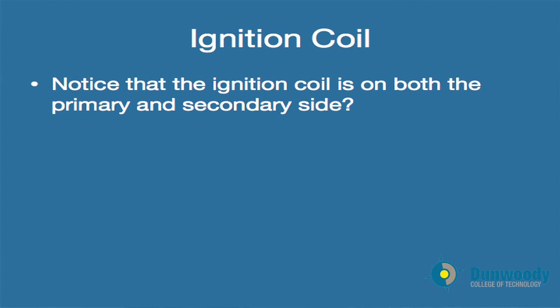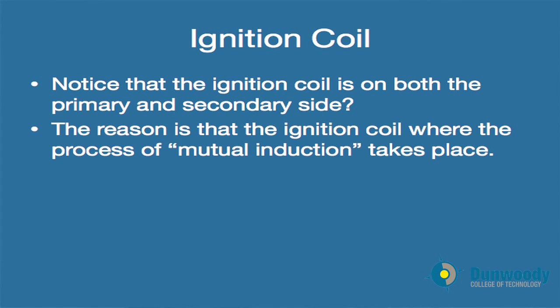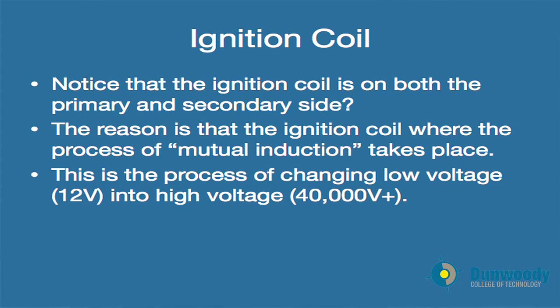What happens inside of the ignition coil is a process called mutual induction. You may remember this topic from back in 172 when we discussed alternators. This is the process of changing low voltage — approximately 12 volts — into high voltage of 40,000 volts or higher.